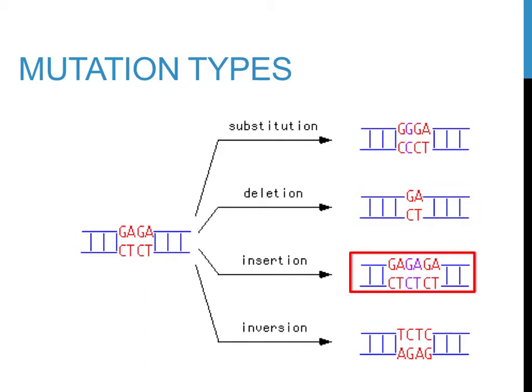In an insertion mutation, a segment of DNA is copied two or more times. Instead of the typical GAGA sequence, you find GAGAGA. Note that the chunk of the DNA sequence, GA, is listed three times instead of twice, as it was in the original sequence. The original letters here are shown in purple.